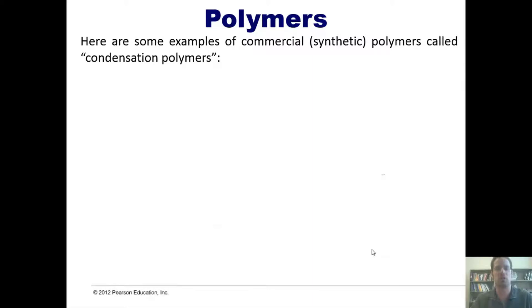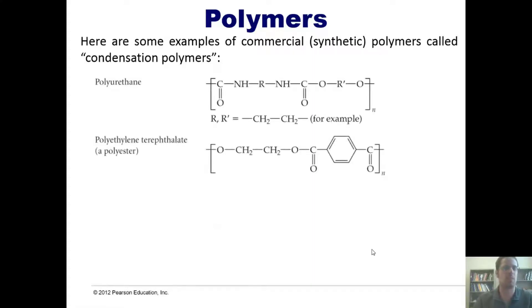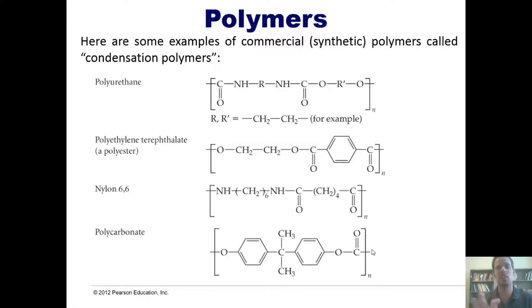Here are some examples of commercial or synthetic polymers that are called condensation polymers, which are a little bit different from addition polymers. Polyurethane has this structure, polyethylene terephthalate, which is a polyester, nylon 6-6, and polycarbonate. Once again, you don't have to memorize these. I only want to show you because it's possible you may have heard of some of these and certainly have interacted with many of them.